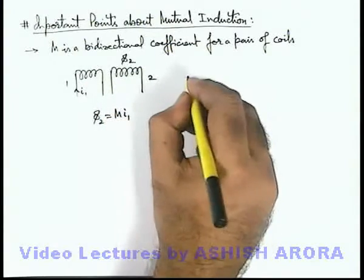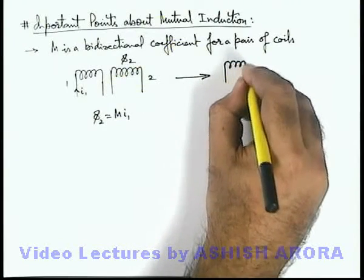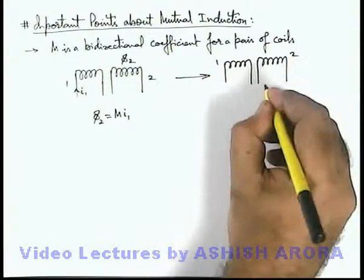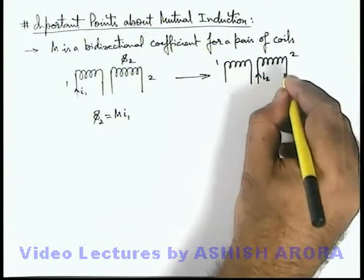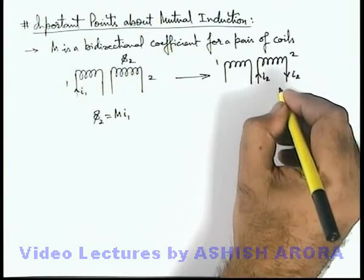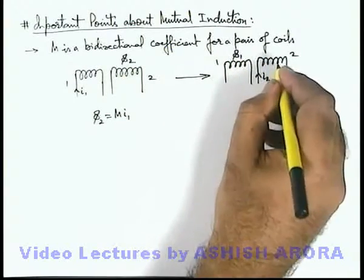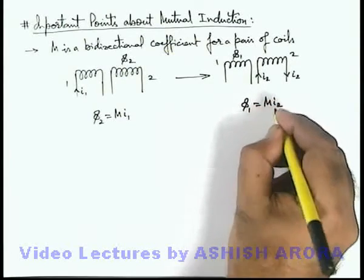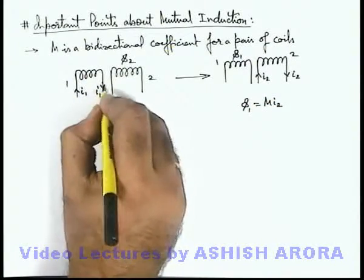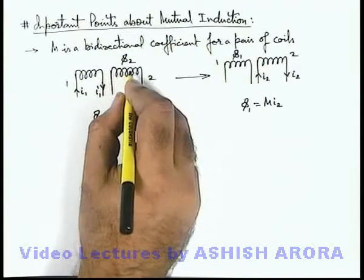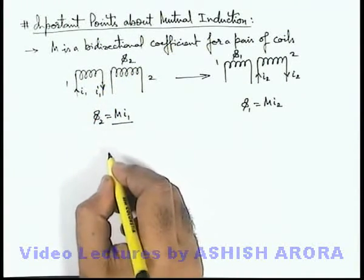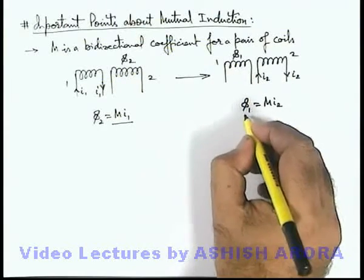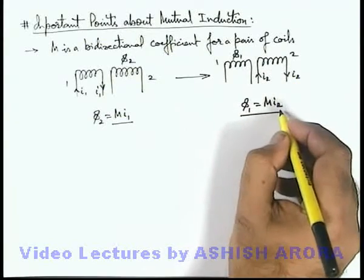The vice versa is also true. For the same pair of coils 1 and 2, if a current i-2 starts flowing in the second coil, a flux phi-1 will be linked due to i-2, and phi-1 can be written as M·i-2. So if current i-1 is flowing, the flux linked with the second coil is M·i-1, and if i-2 is flowing in the second coil, the flux linked with the first coil is M·i-2.